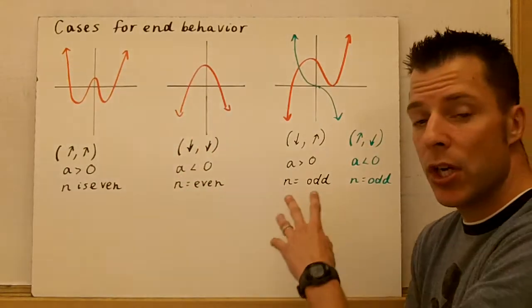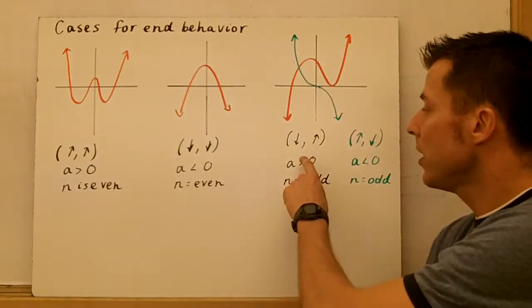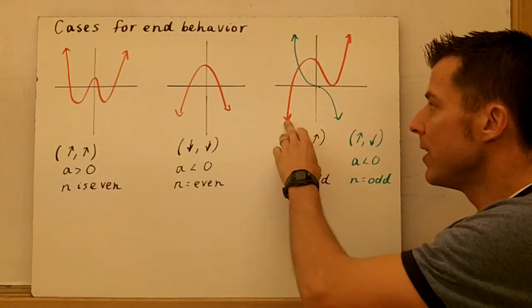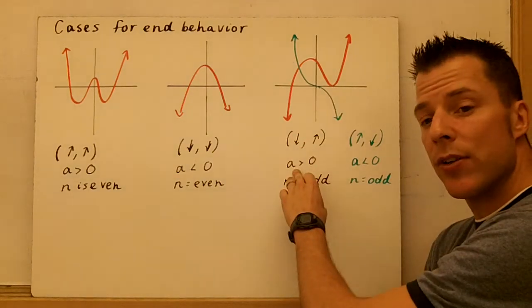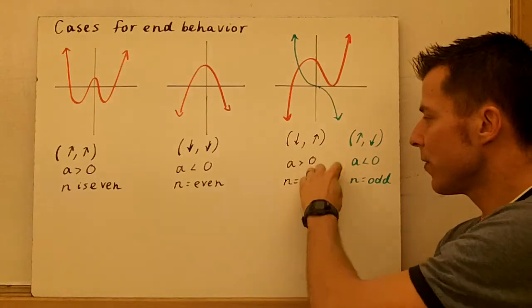When you have odd degrees, the end behaviors have to be in opposite directions. So here, the first one is in red. We have down-up, down-up, and that's when a is greater than zero, and n is odd. So the red graph here is this first section.